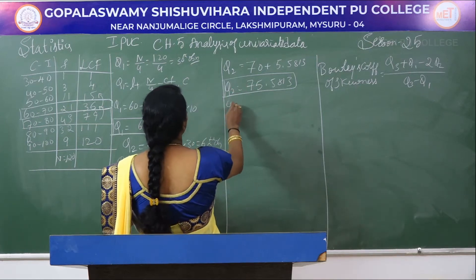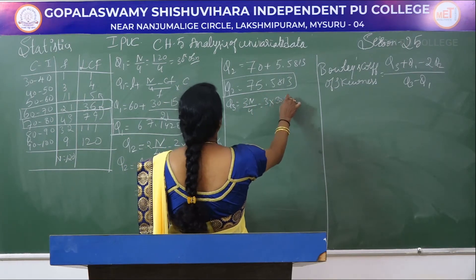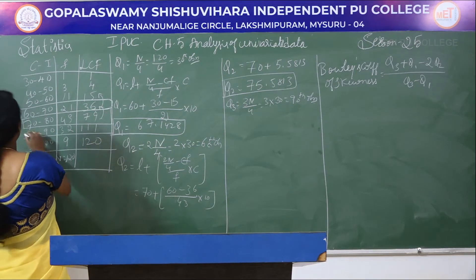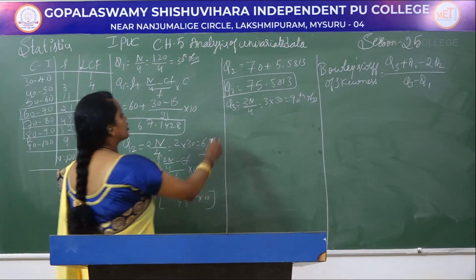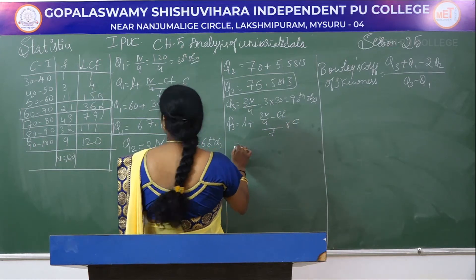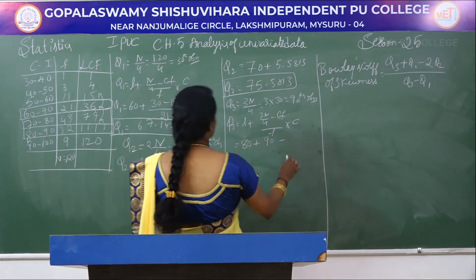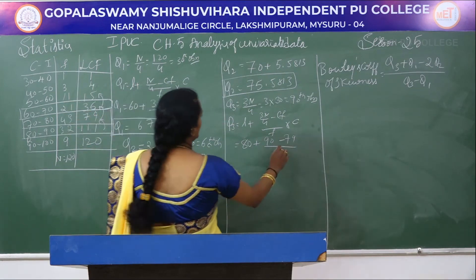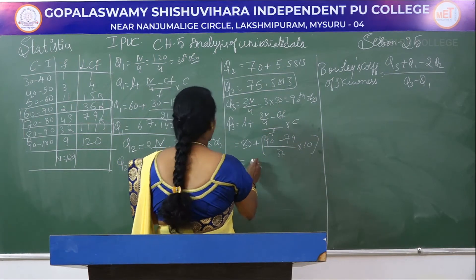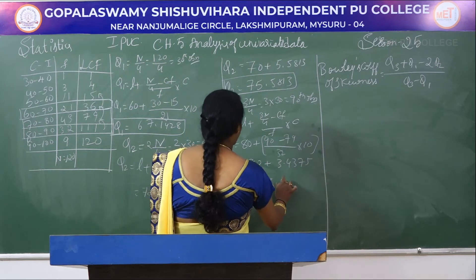Similarly, finding Q3: Q3 is 3 times N by 4, which is 3 into 30 = 90th observation. The 90th observation falls in LCF 111, so we block that interval. Q3 equals L plus (3N/4 minus CF) divided by F, into C. This is 80 plus (90 minus 79) divided by 32, into 10. Q3 equals 80 plus 3.4375, so Q3 is 83.4375.